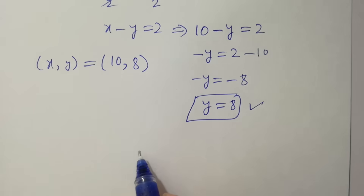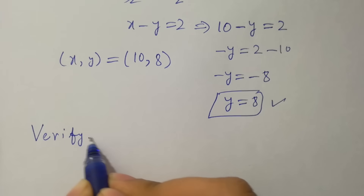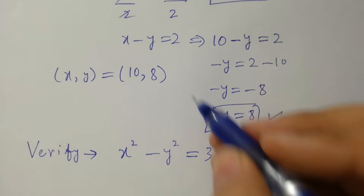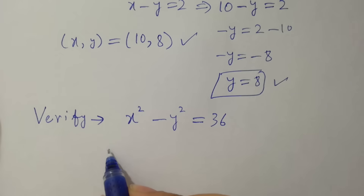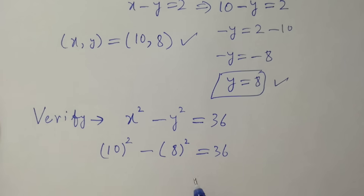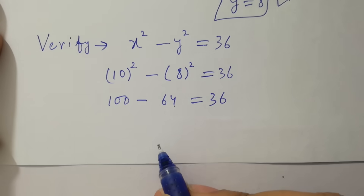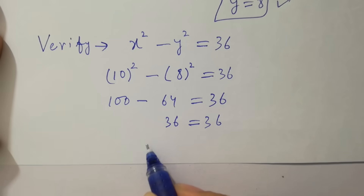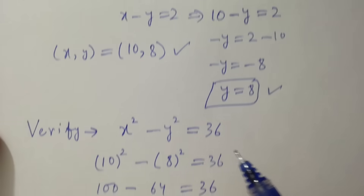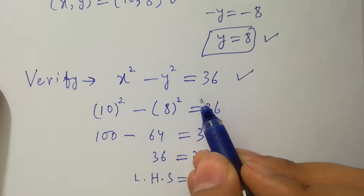In the next step, let's verify: x squared minus y squared equals 36. Substituting x=10 and y=8: 10² - 8² = 100 - 64 = 36. Left-hand side equals right-hand side, which confirms that x=10 and y=8 satisfies the equation x² - y² = 36.